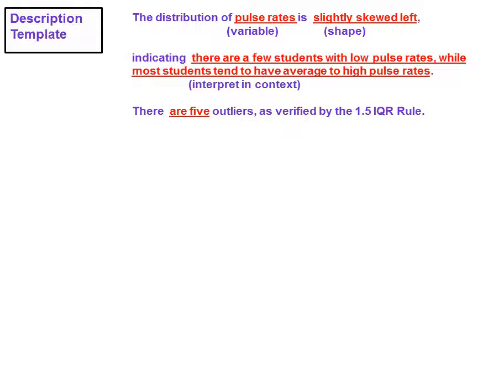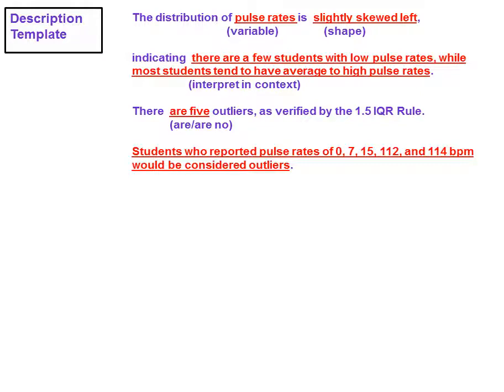There are five outliers as verified by the 1.5 IQR rule. Students who reported pulse rates of 0, 7, 15, 112, and 114 beats per minute would be considered outliers.